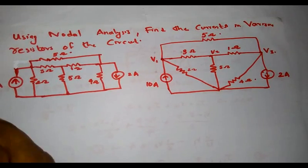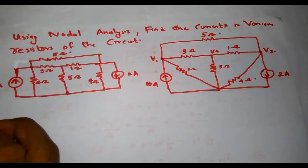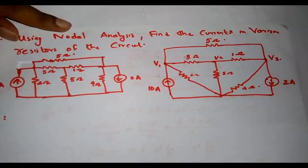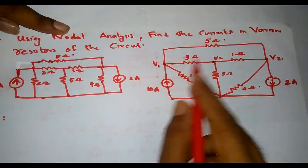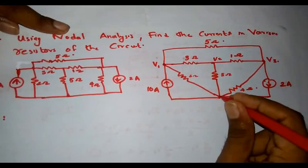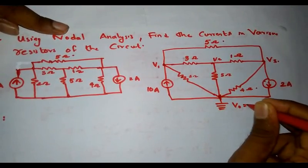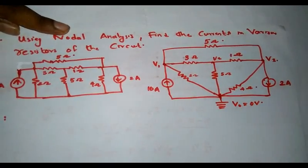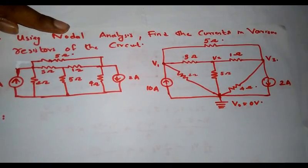The first step is to identify the principal nodes. Here I have identified three principal nodes: V1, V2, and V3. I have assigned the bottom node as the reference node, where V0 is equal to 0 volts. So we have three principal nodes V1, V2, V3, and reference node V0.